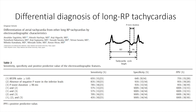In our patient, if we have criteria number one and three together, we have a sensitivity of around 57 percent and a specificity of 100 percent, and a positive predictive value of 100 percent. So we can use these simple ECG criteria to differentiate atrial tachycardia from other differential diagnoses in case of one-to-one conduction. Our patient had an atrial tachycardia.